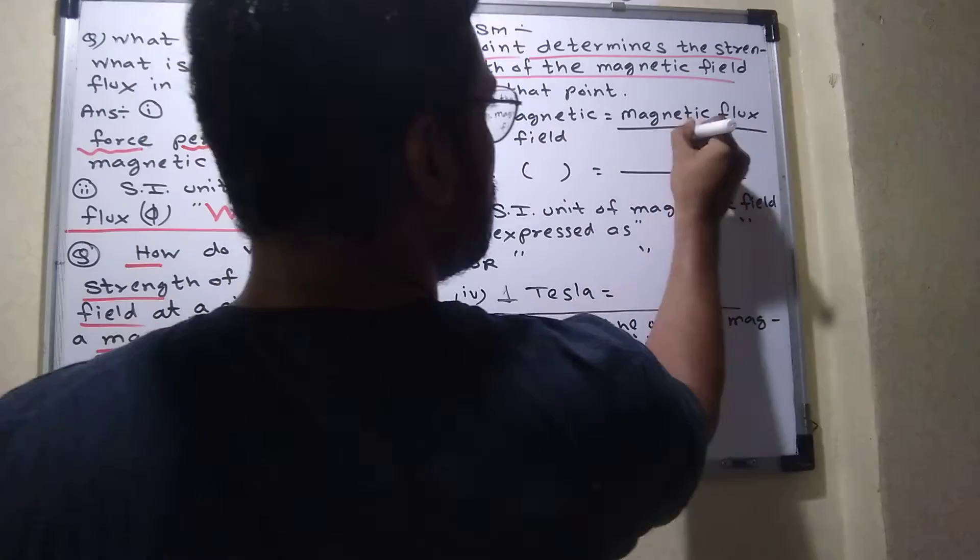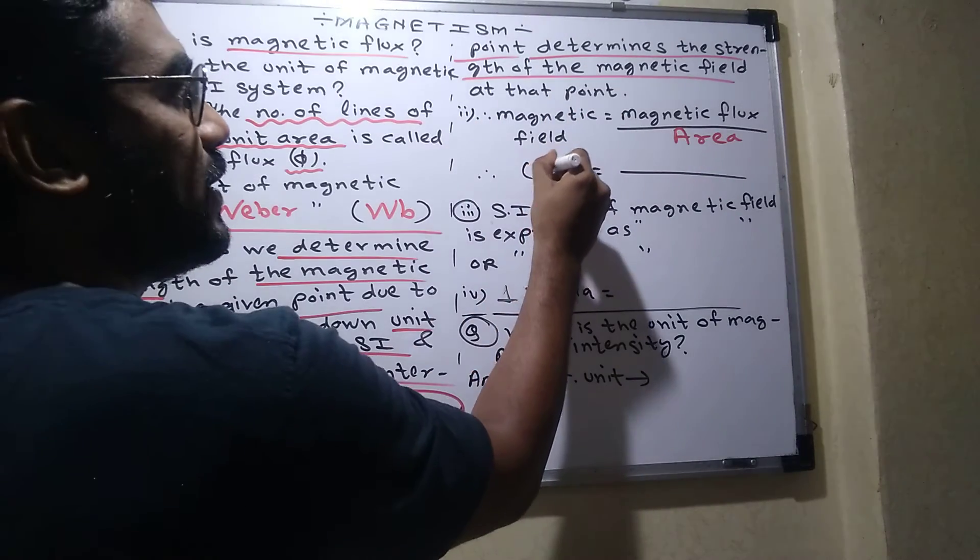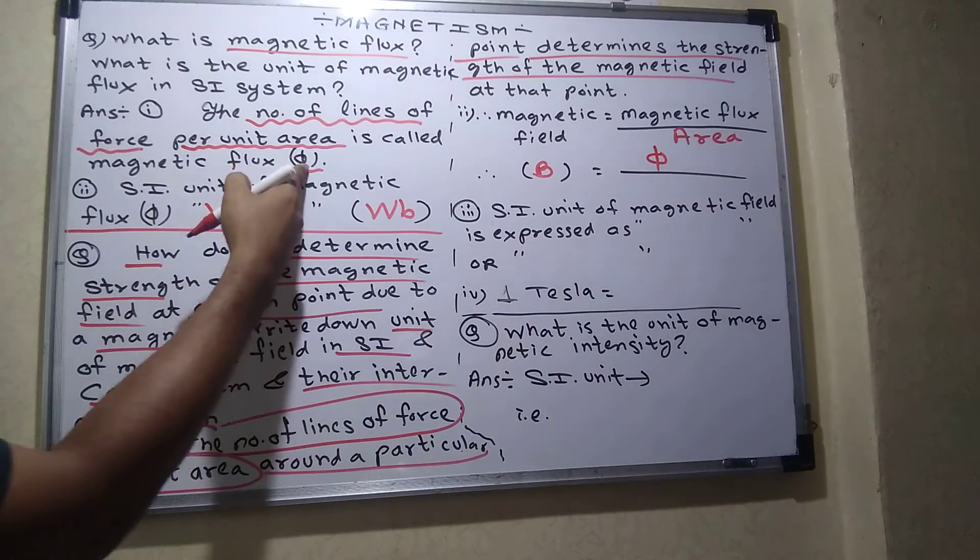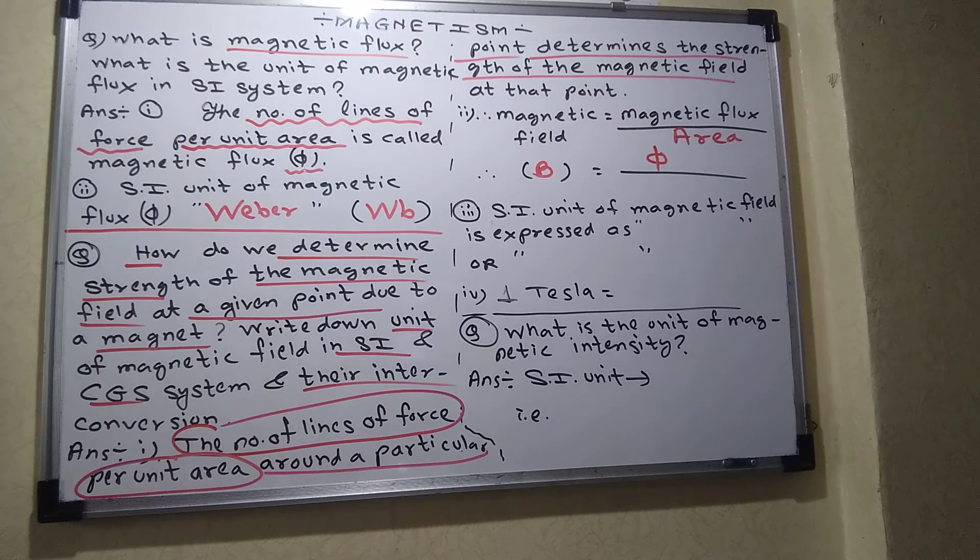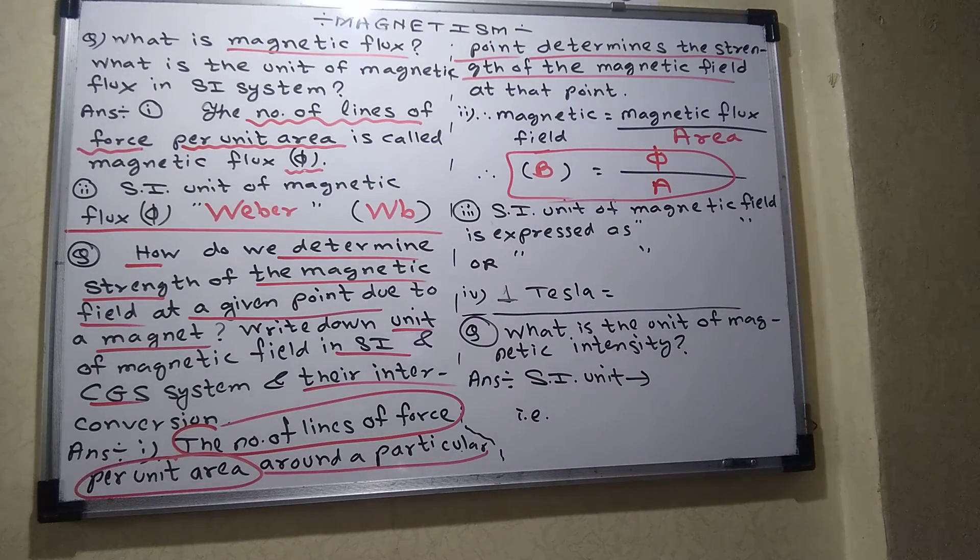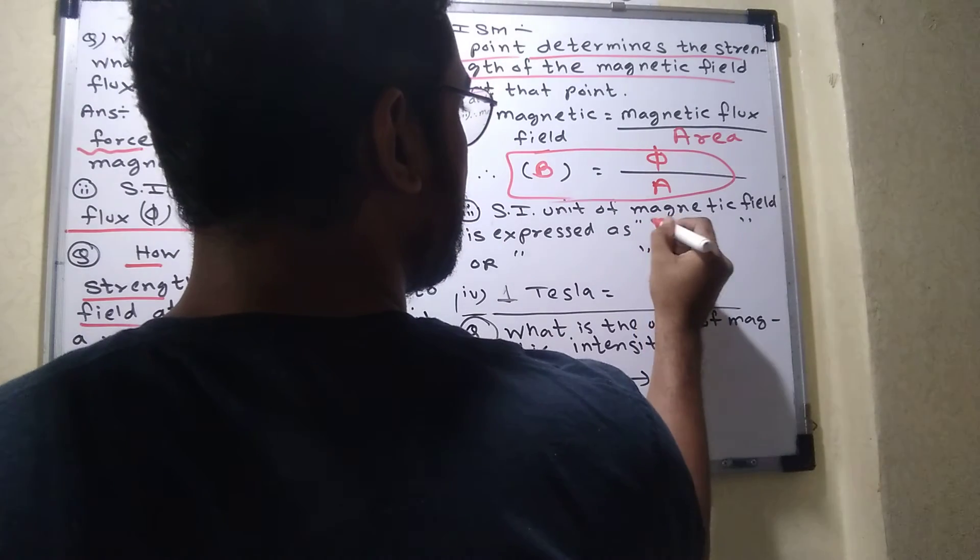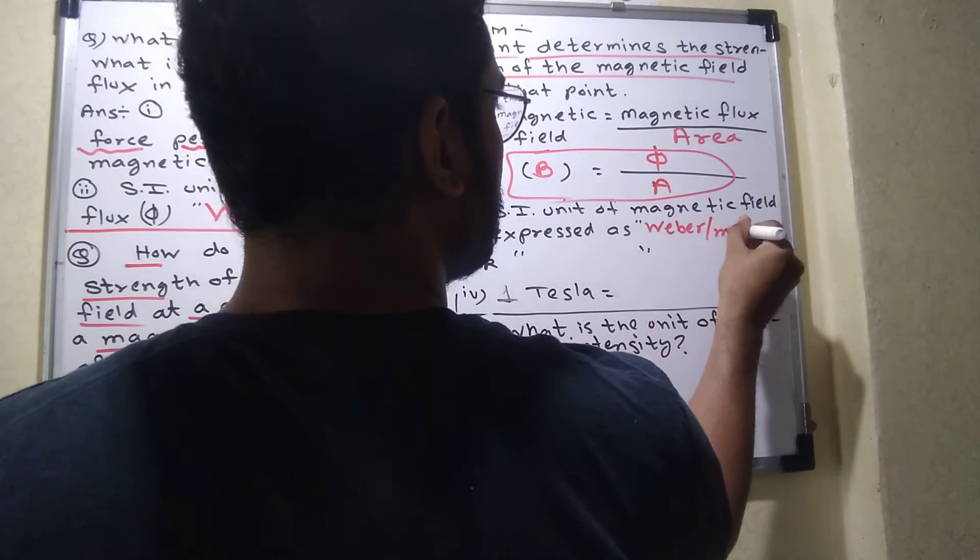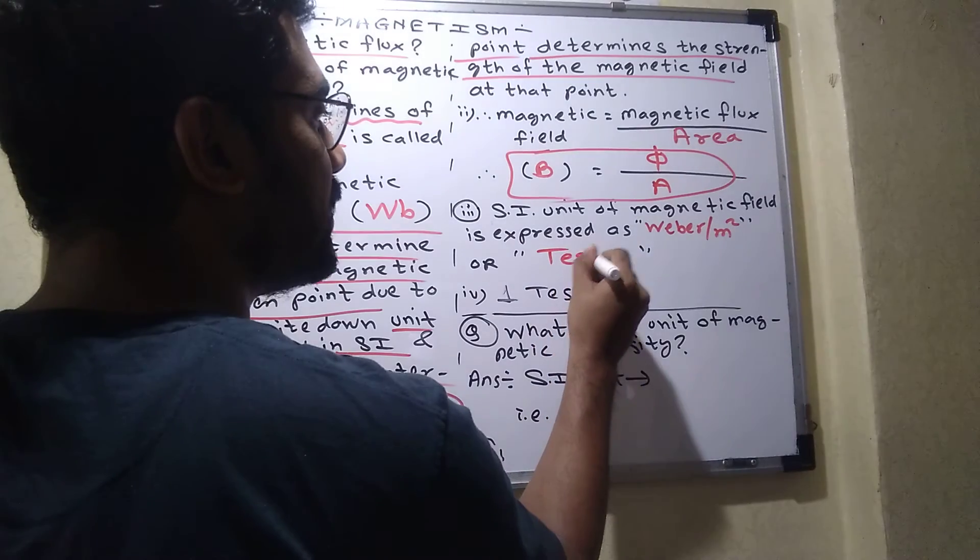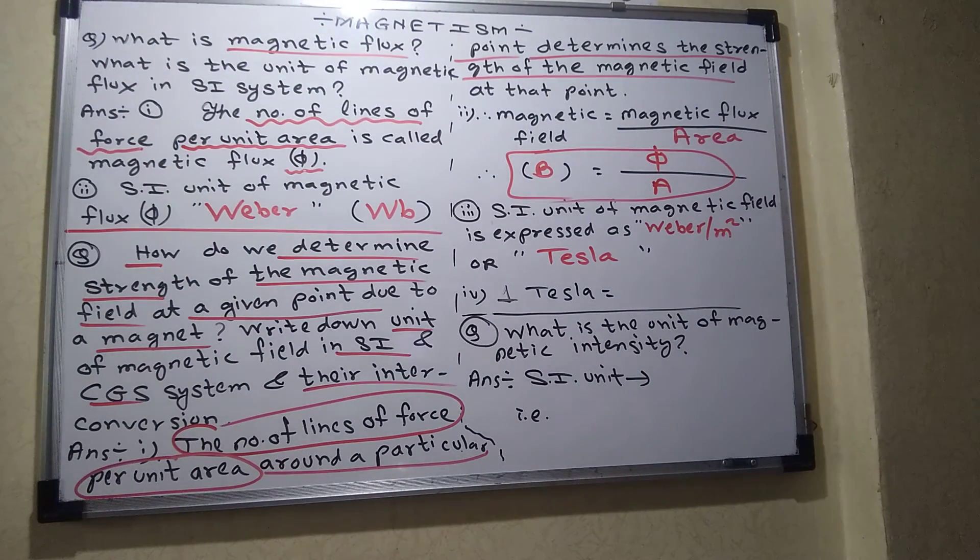Magnetic flux is represented by the symbol phi. The pronunciation is phi. Phi per area. So this is the formula for B. B is equal to phi upon A. What is SI unit? SI unit of this particular area A is Weber per meter square. SI unit of magnetic field is Weber per meter square or it is also called Tesla. Tesla is what? Meaning of Tesla is Weber per meter square. You remember this unit. Okay. This is the new concept.